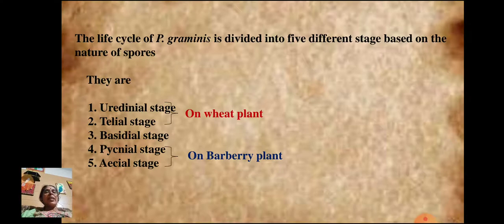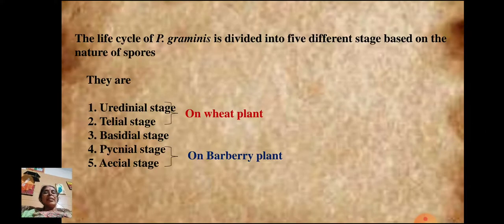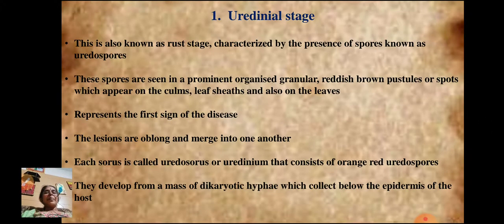The five stages are: the uredinal stage and telial stage, both seen on the wheat plant; the basidial stage, seen on the soil or harvested straw; and the pycnial stage and aecial stage, both seen on the barberry plant.